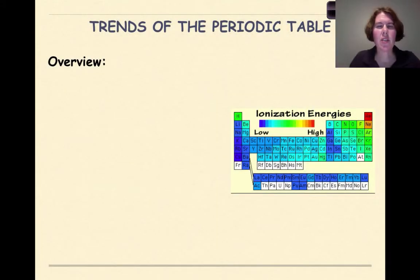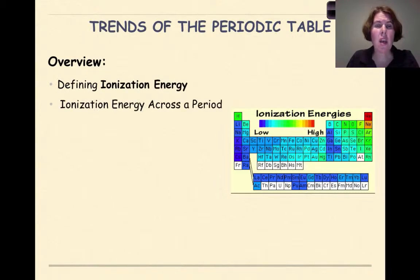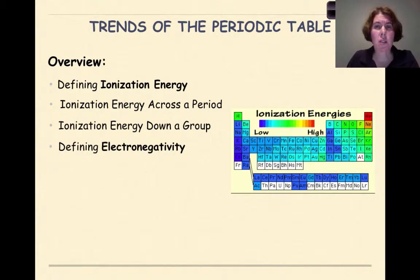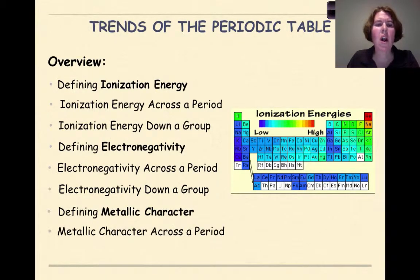Hi, my name is Dr. English, and today we're going to continue our conversation about trends of the periodic table. Specifically, in this tutorial we're going to be looking at ionization and the trends of ionization across the period and down a group. Then we're going to look at electronegativity across the period and down a group, and then finally metallic character across the period and then down a group.